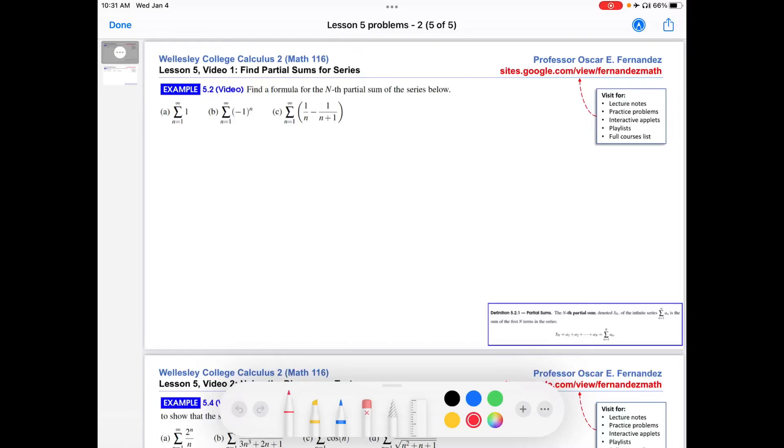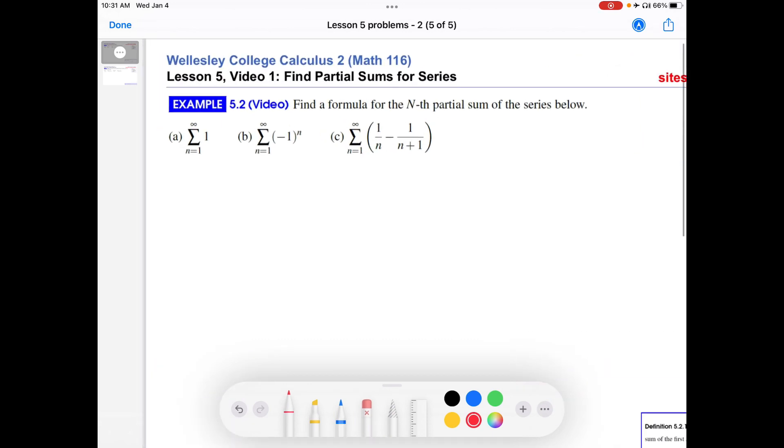Hi, this is Professor Fernandez. In this video, we're going to work out an example on finding partial sums for series. This is an example from Lesson 5 in the Calculus 2 notes. If you want to read those notes or download other resources, head over to the site and you'll find all these other things there. Let me zoom into the example and we can get started.